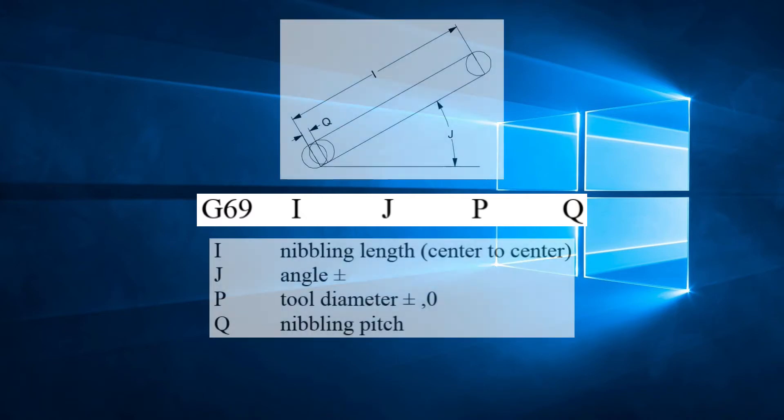Let's break this down. I is the length of the line from the center of the first hit to the center of the last hit. J is the angle of the line. P is the tool diameter. Q is the pitch or distance between the hits.